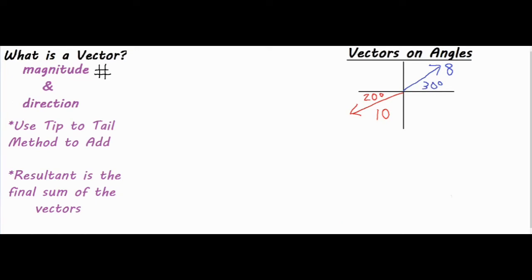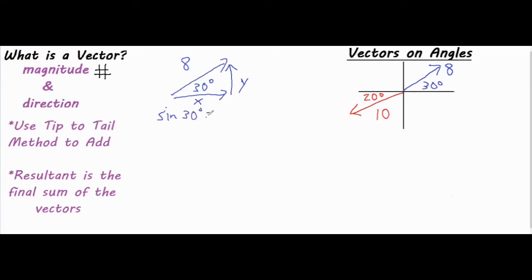The first step is to redraw the vector and make it into a right triangle. I'll take my blue vector — it's going up and over — with a length of eight, and close it off into a right triangle by drawing a horizontal and vertical component. I'll call these the x and y components. To solve for them, I'll use sine and cosine, since both involve the hypotenuse, which we know is eight. The sine of 30 degrees equals the opposite side, y, over the hypotenuse, eight.